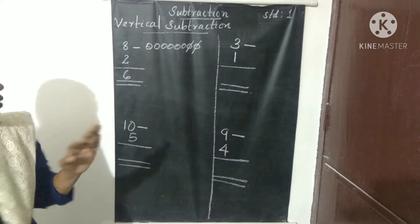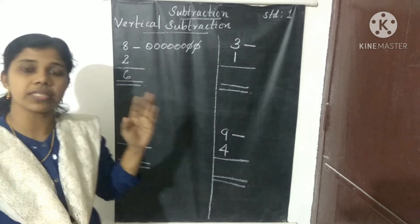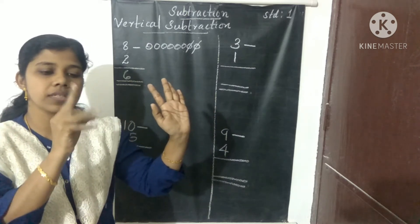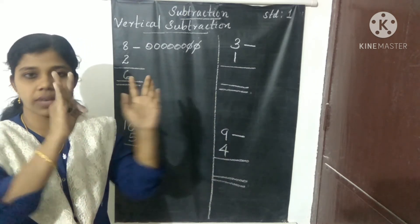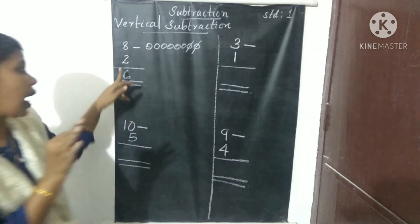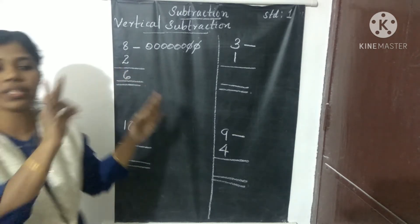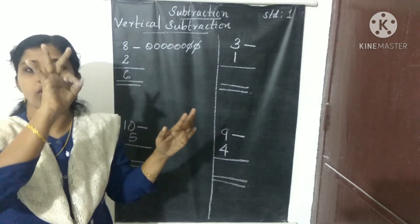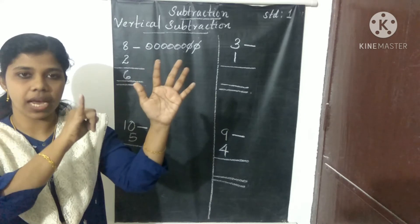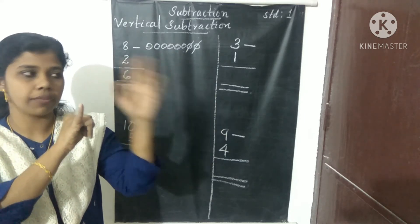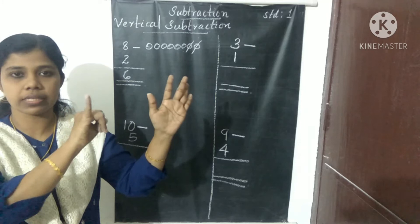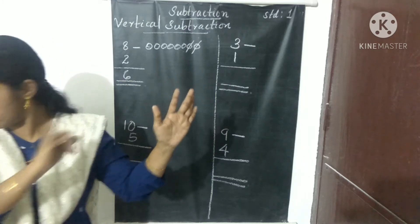Now using hands for 8 minus 2: take 8 fingers — 5, 6, 7, 8. Then take away 2: 1, 2 taken away. What is the balance? 6. That is 5 plus 1 equals 6.